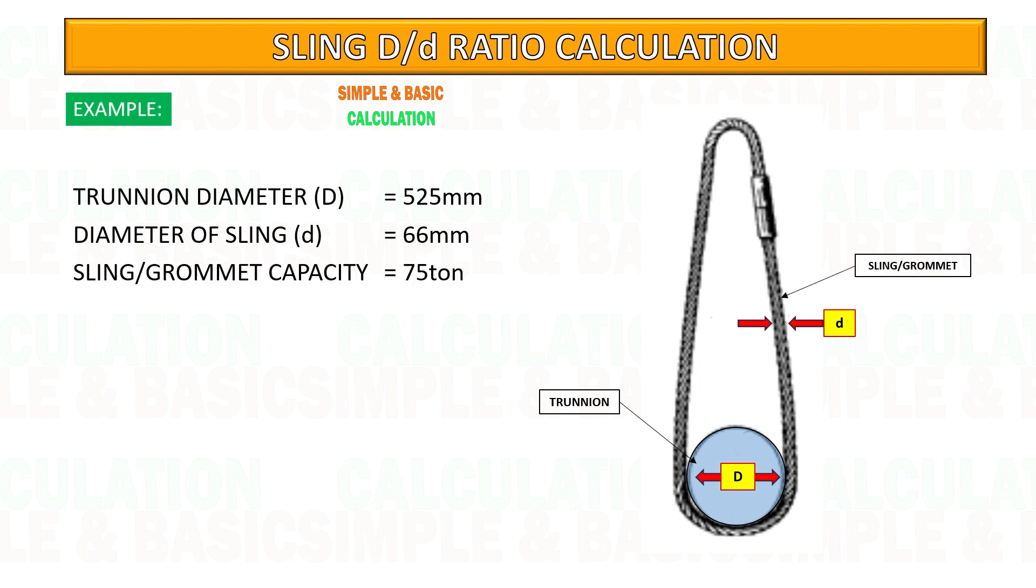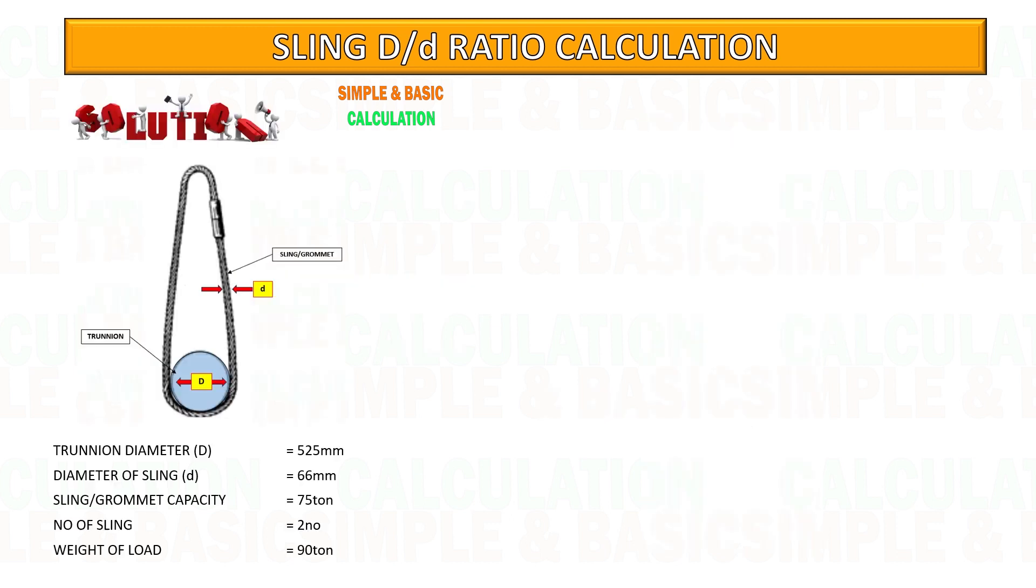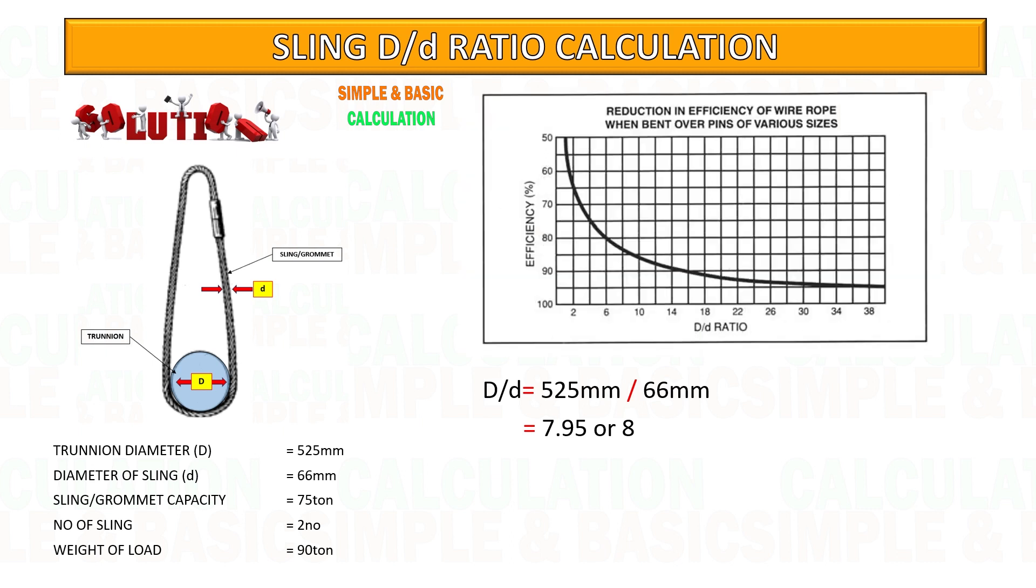Trunnion diameter is 525 millimeters and the sling diameter is 66 millimeters. See the example calculation for D/d ratio. To get the D/d ratio, we will divide the trunnion diameter by sling diameter. Once we get the value, we will plot it into the reduction chart.